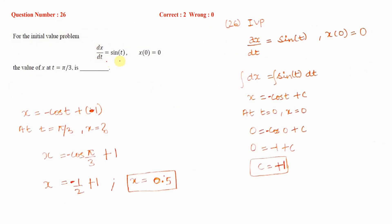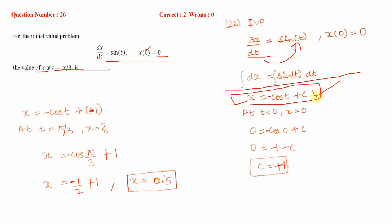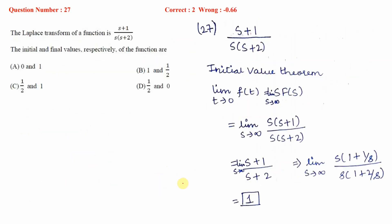For the initial value problem, dx/dt = sin(t) with x(0) = 0, integrating both sides gives x = −cos(t) + C. Applying the initial condition x = 0 at t = 0 gives C = 1. Substituting t = π/3: x = −cos(π/3) + 1 = −1/2 + 1 = 0.5. The answer is 0.5.